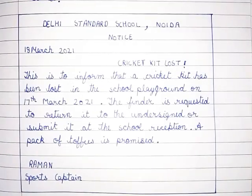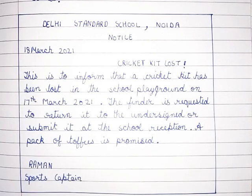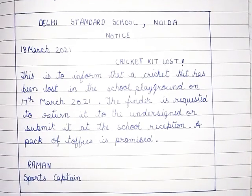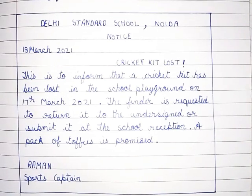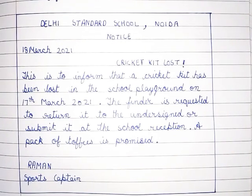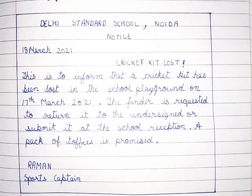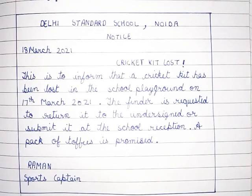Delhi Standard School, Noida. Notice — 18th March 2021. Cricket kit lost. This is to inform that a cricket kit has been lost in the school playground on 17th March 2021. The finder is requested to return it to the undersigned or submit it at the reception.